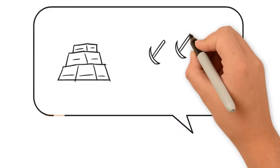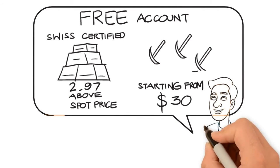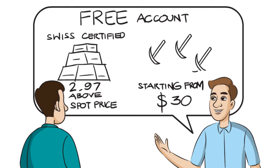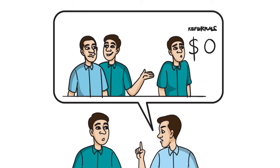So Oscar gave them different options to start from. He said you can set up a free account and buy your Swiss certified gold and silver for just $2.97 above spot price, and additional mining power starting from $30. This would also pay them a daily return, but they wouldn't be getting paid for referring others to buy Swiss gold, silver, or digital mining.